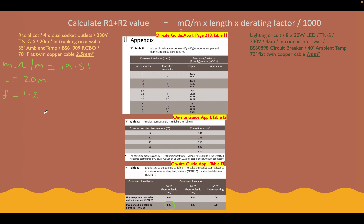So let's put this into the calculation. Our R1+R2 for this circuit is equal to our de-rating factor multiplied by our length multiplied by our milliohms per metre value, all divided by 1,000. That's 19.51 × 20 × 1.2 ÷ 1,000, which gives us a value of 0.46 ohms. So we've got our R1+R2 value for the radial circuit. Let's do our lighting circuit exactly the same way.